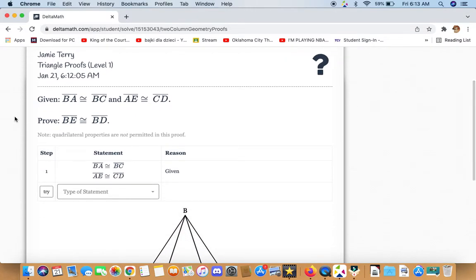Given BA is congruent to BC and AE is congruent to CD, we have to prove that BE is congruent to BD.